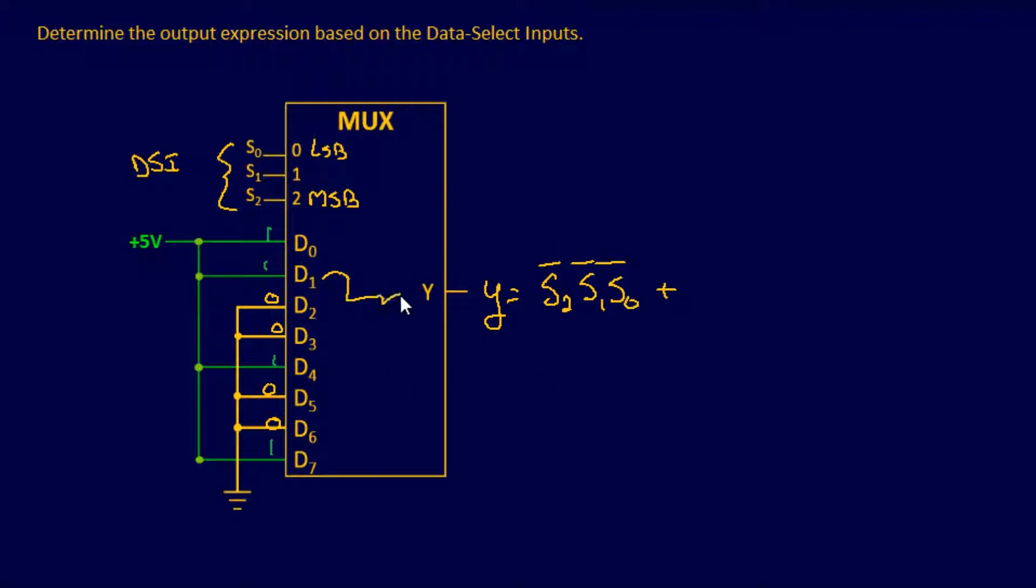We want to find the data select binary input for one. So we're looking at s2, s1, s0. And again, this is 0. And when we want to find a 1, well, the binary input for 1 is going to be not, not, and then 1. So 0, 0, 1.